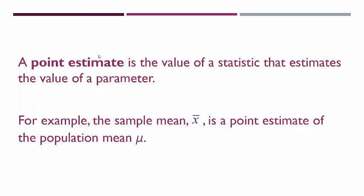In this class, whenever we wanted to estimate the value of a parameter, we've actually been using what's called a point estimate. A point estimate is the value of a statistic that estimates the value of a parameter, and it is a single-value estimate — there's only one value when you calculate a point estimate.